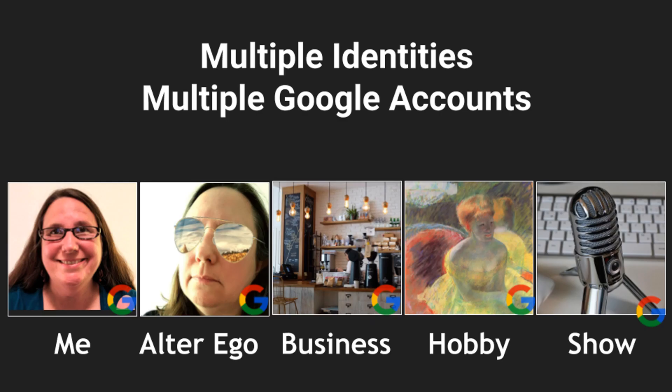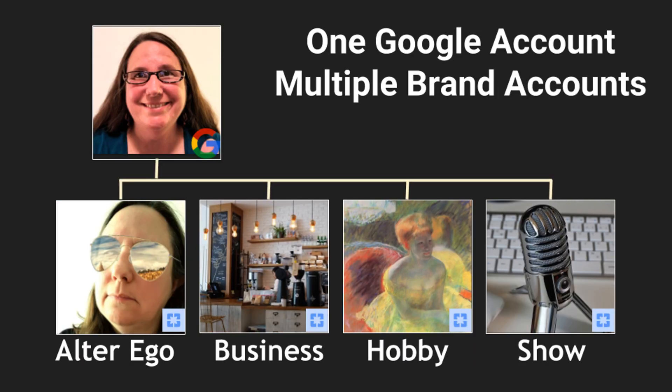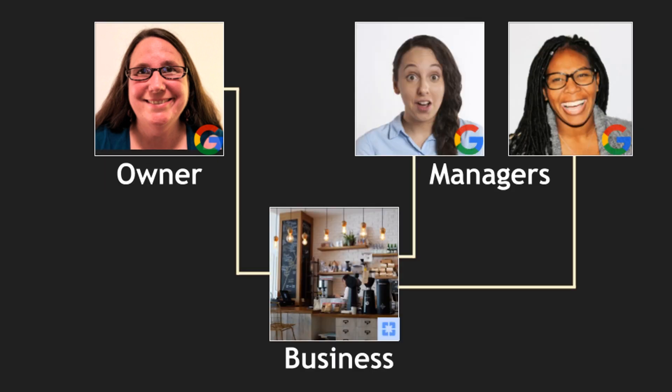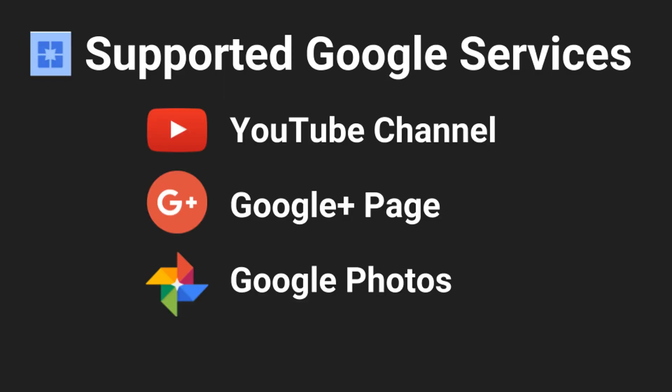Instead of creating a separate Google account for each identity, business, hobby, or show, you can create brand accounts for those identities that are owned by your personal Google account. Each of these brand accounts can also have additional managers. If you have a Google Plus page or YouTube channel that uses a name other than your personal name, you probably already have at least one brand account.